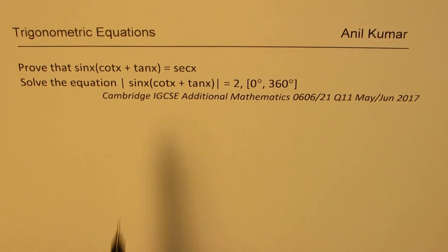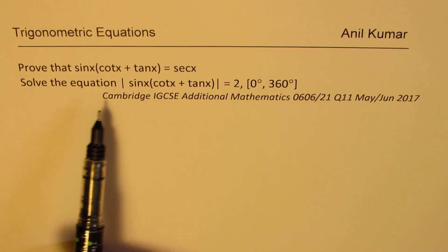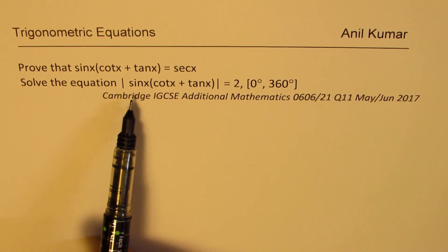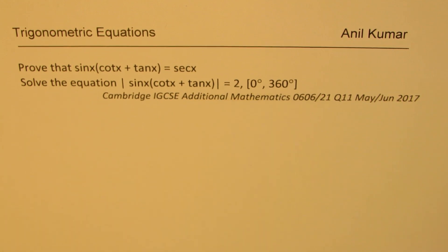Prove that sin x times cot x plus tan x equals to secant x. Solve the equation absolute value of sin x times cot x plus tan x equals to 2 where x is between 0 to 360 degrees. You can always pause the video, answer the question, and then look into my suggestions.